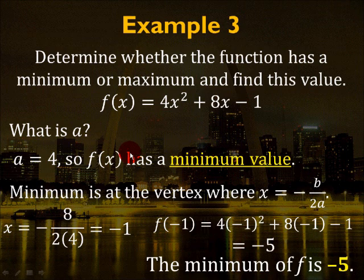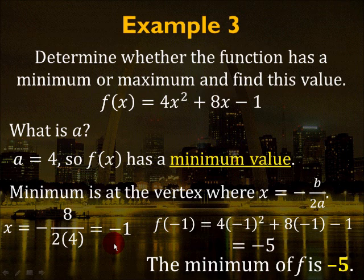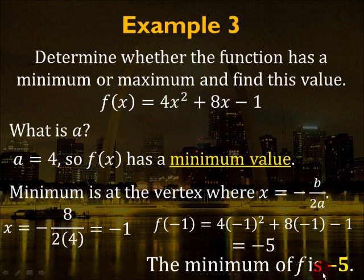To find the minimum or maximum: first determine whether a is positive or negative — positive gives a minimum, negative gives a maximum. Solve for the x-coordinate of the vertex using -b/(2a), then plug that back into the function to find the y-coordinate. The y-coordinate is the minimum or maximum value of the function.